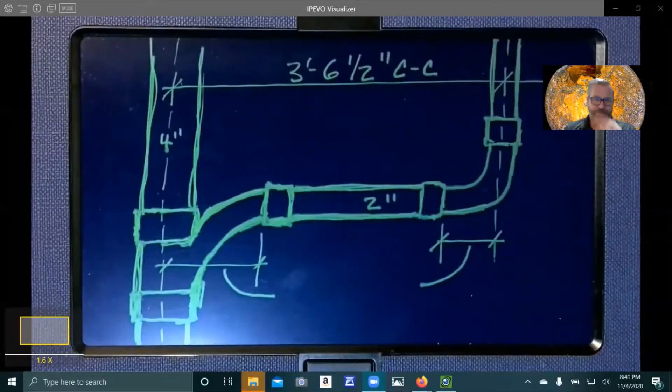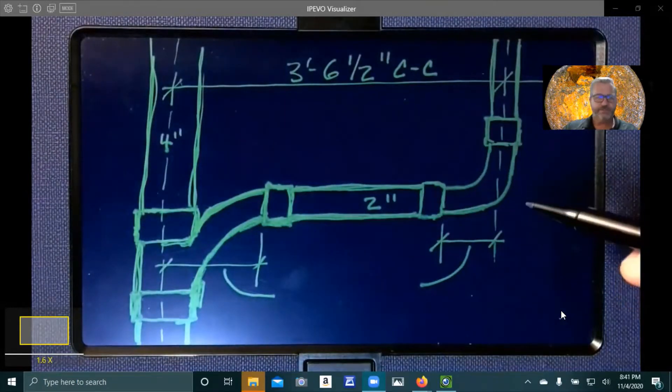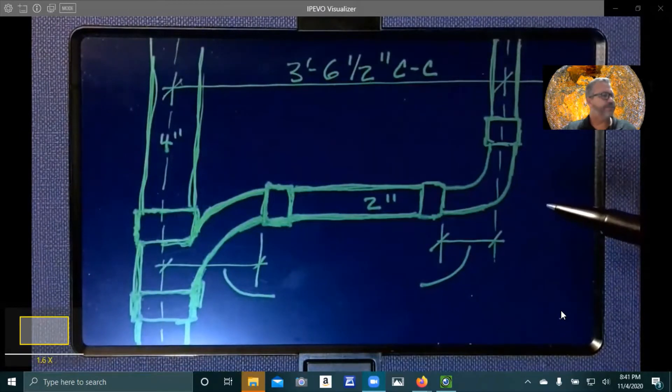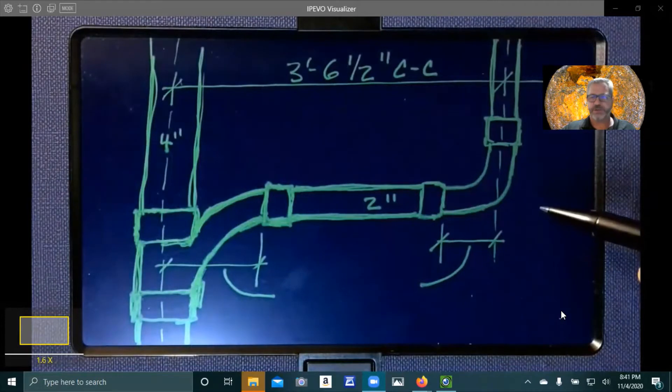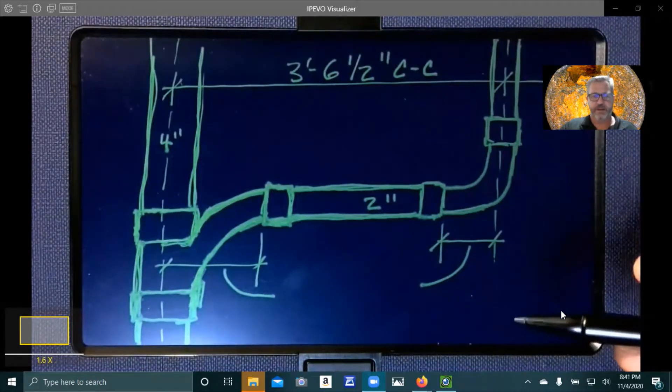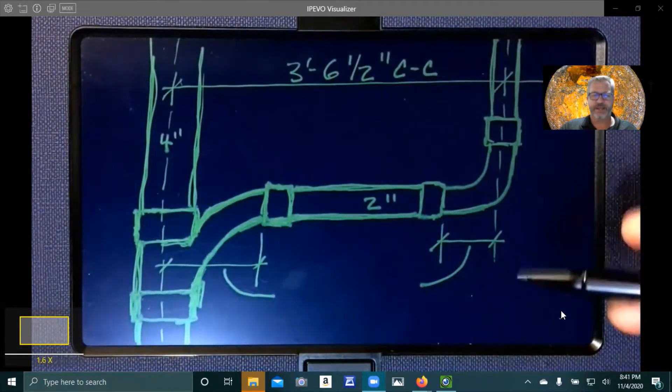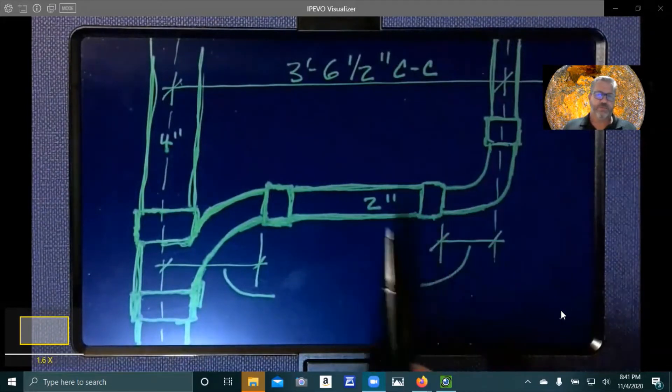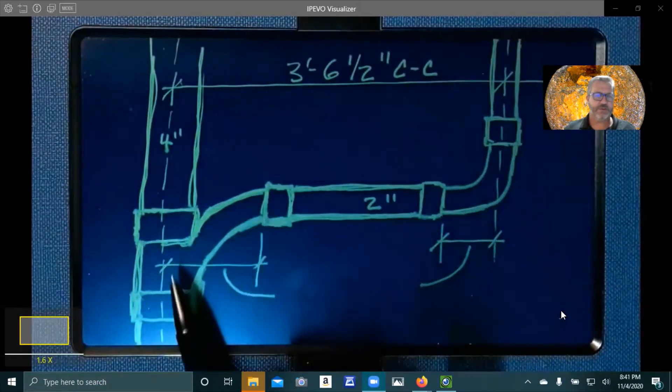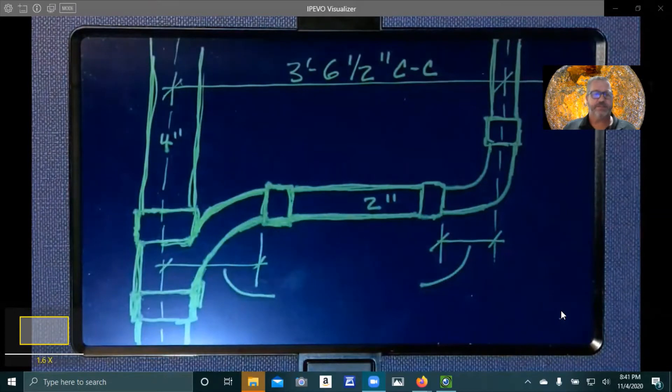What I did was I went ahead and drew up a small sample of what you would have in a case of running a waistline. So here we have a long turn quarter bend. They prefer to call things in ABS a little bit differently. This is a long turn or a long sweep quarter bend, and this is located on page 31 of the Charlotte catalog. You can go to Charlotte pipe and foundry and get a PDF version of their catalog online. And then I went ahead and wrote down that this is two inch pipe. So we're running a two inch waistline all the way across and tying into a four by two combination fitting. And the four by two combination fitting is considered a four by two reducing combination Y and eighth bend. That's on page 50 of the catalog.